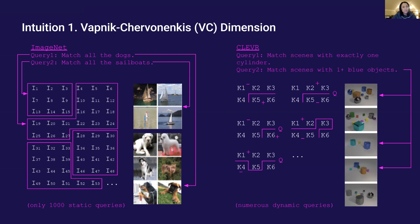But on datasets like Clever, many dynamic queries can be formed, such as identifying all the scenes with one or more blue objects. Here, we need to subset the scenes in many dynamic ways so we may hit the limit imposed by the vector's VC dimension.